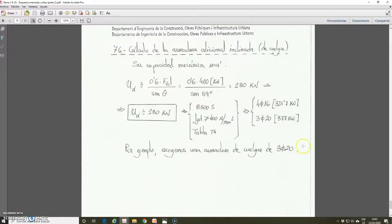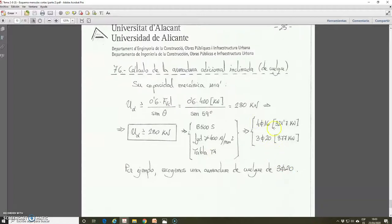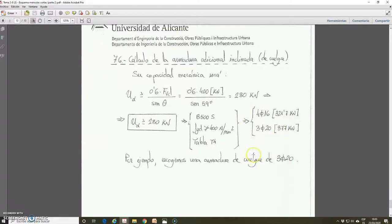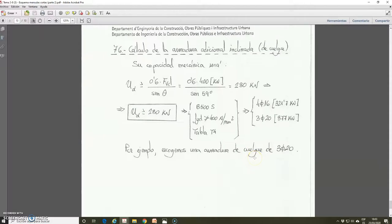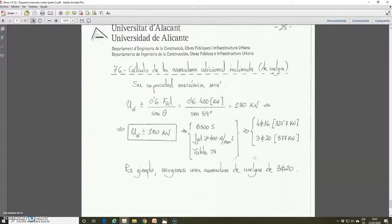And finally, we take here as inclined reinforcement, additional reinforcement for this corbel with suspended load, three bars of 20. Could be a solution, but four bars of 16 are also adequate. And with this, I have finished this example of the design of corbels with suspended load.